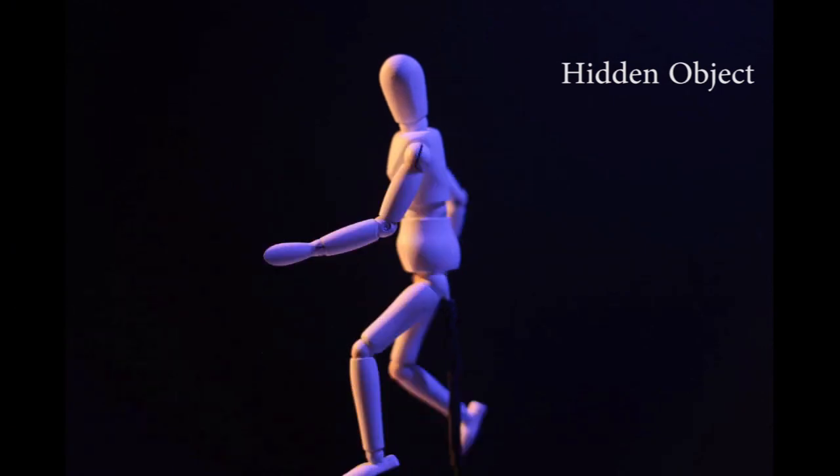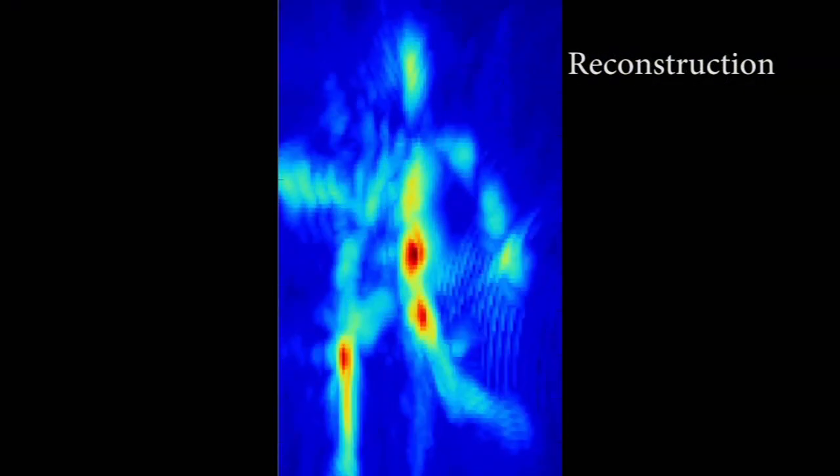If the hidden object is moving, the 3D shape can also show the corresponding motion.